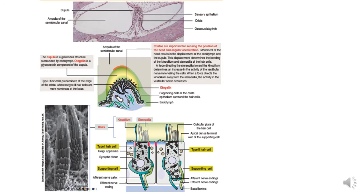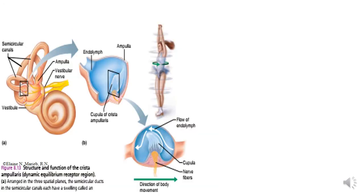There are two types of hair cells: type 1 is goblet-shaped and type 2 is columnar. The mechanism of detecting angular head movement includes: first, rotational head movement leads to movement of the semicircular canal and ducts, but the endolymph is stationary due to the inertia of fluid. Next, the ampullary cupula is dragged by various movements of the ducts and endolymph. Third, a deviation between the hair cells and cupula elicits nerve impulses in nearby nerve endings. And last, movement of hair toward the kinocilium leads to depolarization of the hair cells and stimulation of the nerve endings. Contrary movement induces hyperpolarization and inhibition.